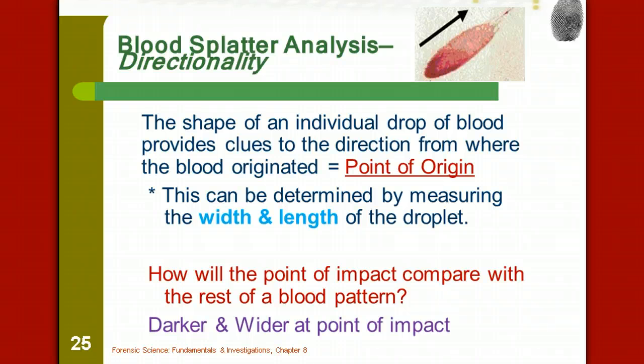The shape of an individual blood drop provides a clue to the direction from where the blood originated, and that's called the point of origin. This can be determined by measuring the width as well as the length of the droplet. How will the point of impact compare with the rest of the blood pattern? At the point of impact, it's going to be darker and it's going to be wider. When we look at this blood droplet up here, here's the point of impact, but see how there's the trail over here? That points in the direction that the blood was coming from.